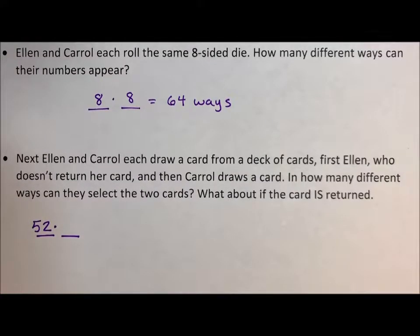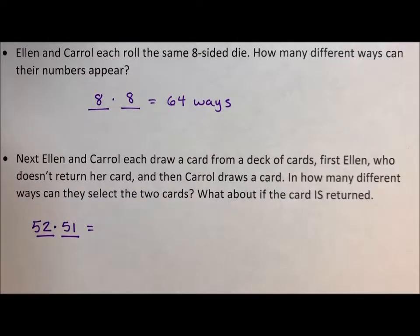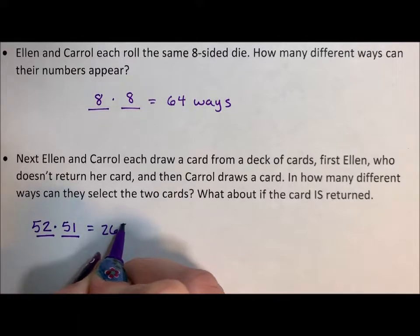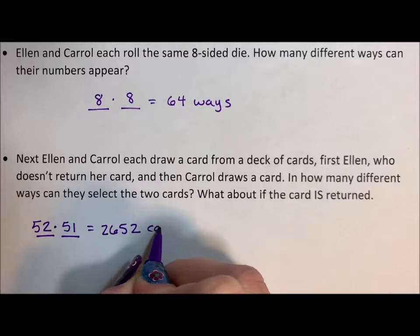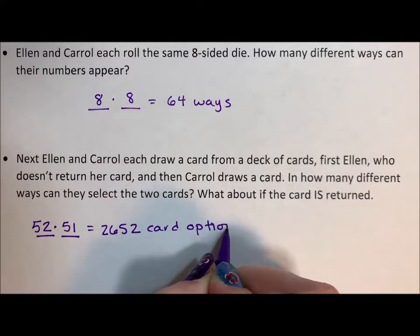She doesn't return it, so when Carol draws her card, she only has 51 cards left from which to choose, which means 52 times 51 is 2,652 card options.